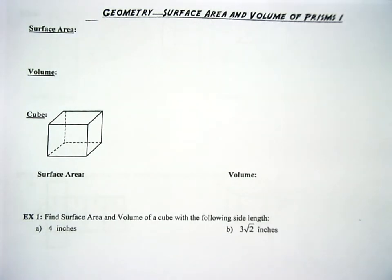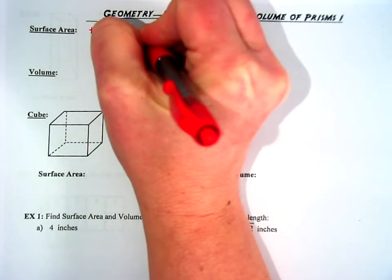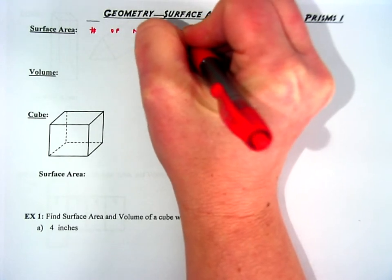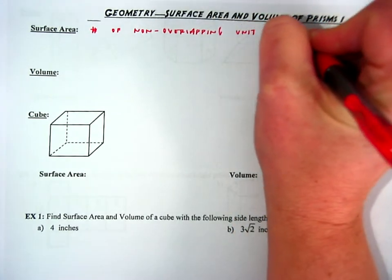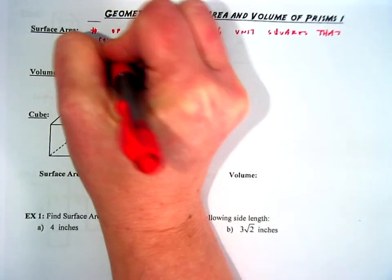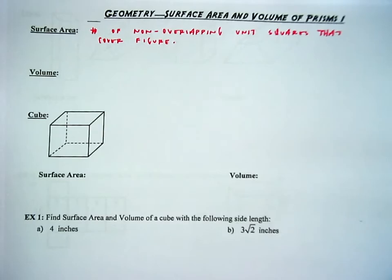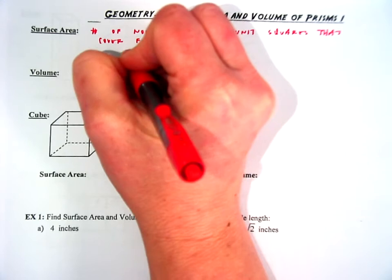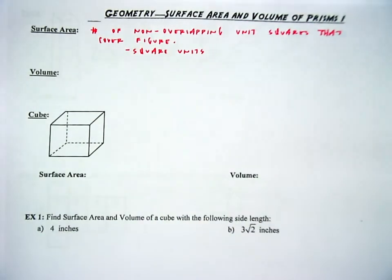Today we're taking on surface area and volume of prisms. The surface area is always thought of as the number of non-overlapping unit squares that cover a figure. We always express it in terms of units squared or square units. You can picture the surface area as the wrapping paper that would cover a box.